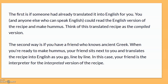This is a compiled programming language. The second way is: if you have a friend who knows ancient Greek, and the recipe is written in ancient Greek, when you are ready to make hummus, your friend sits next to you and translates the recipe into English line by line. In this case, your friend is an interpreter for the interpreted version of the recipe. This is the difference — you will now understand what is a compiled language and what is an interpreted language with a real-life example.